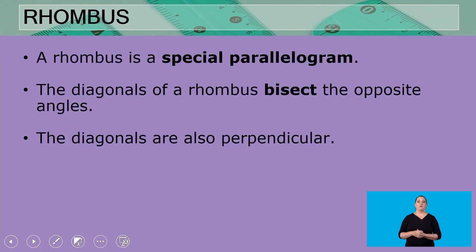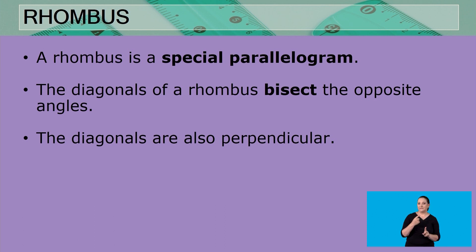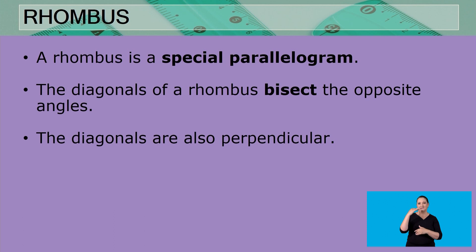Welcome back from the ad break. Let's continue with our lesson and go on to the second concept on our concept map, which is the rhombus. A rhombus is a special parallelogram. When we defined a rhombus, we said that it is a parallelogram that has all four sides equal. Let's now look at the angles and diagonals of a rhombus.